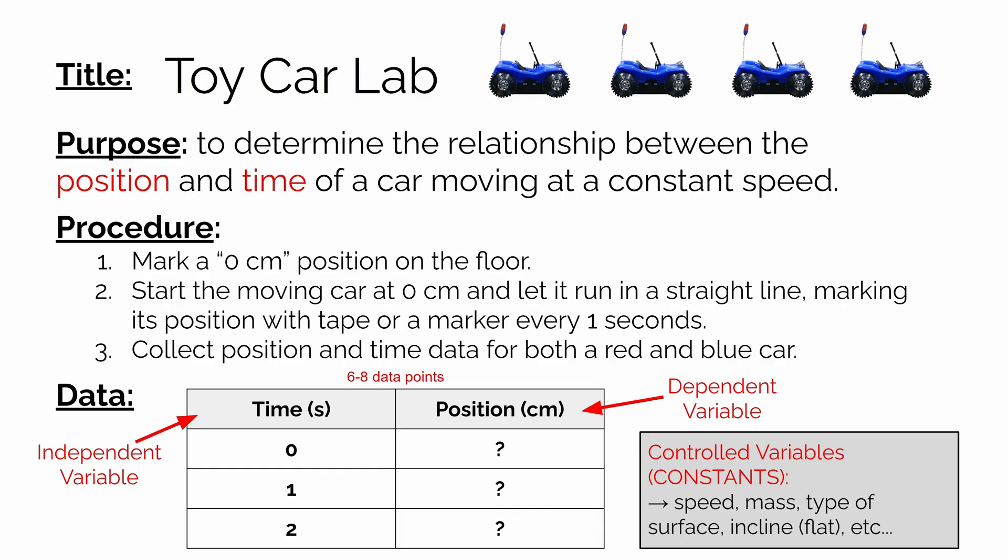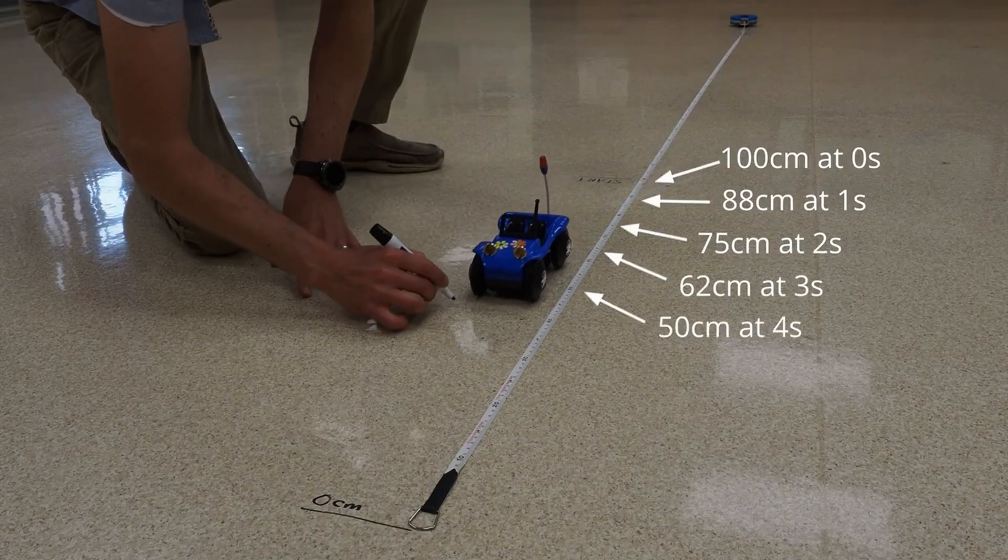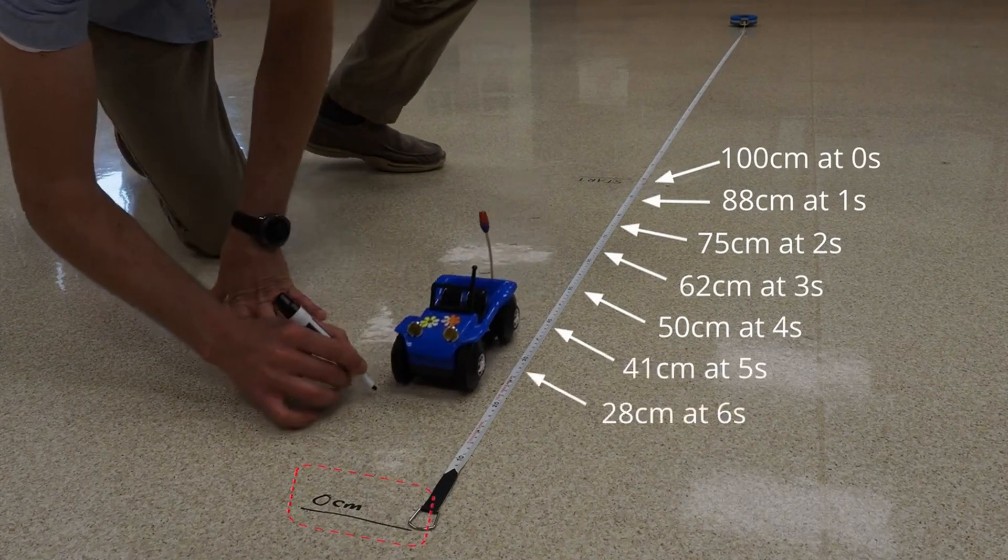For our investigation, we're going to look at the relationship between the position of the car, where is it, at particular times. And so in class, we used cars out in the hallway and marked where the car was on the floor with a dry erase marker at specific times.